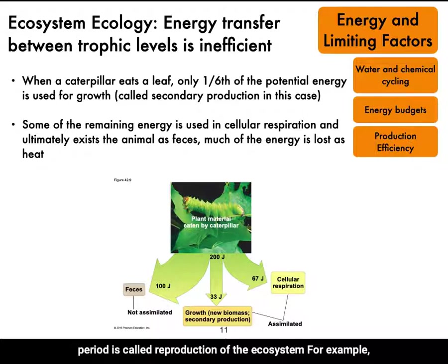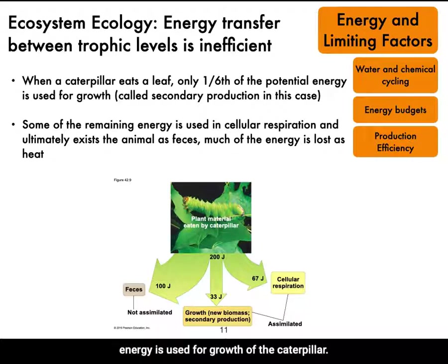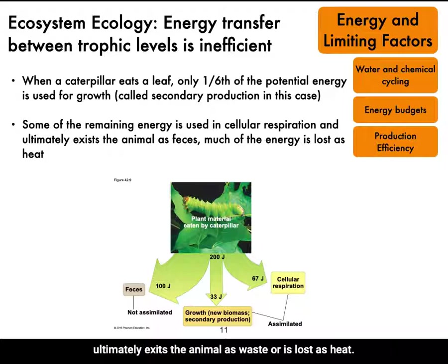For example, when a caterpillar eats a leaf, only one-sixth of the potential energy is used for growth of the caterpillar. The rest of the energy is used in cellular respiration and ultimately exits the animal as waste or is lost as heat.